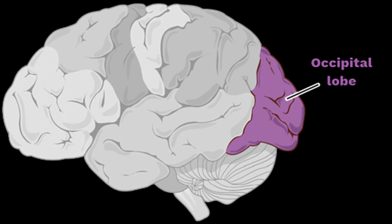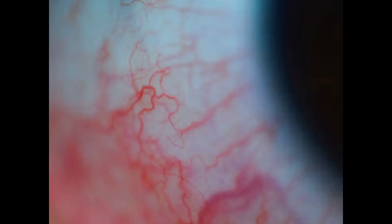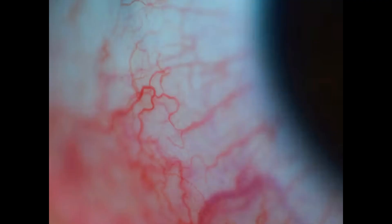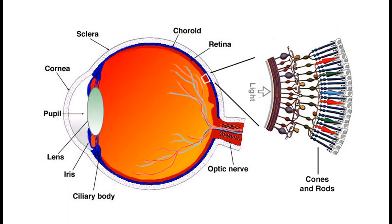The occipital lobe is the visual processing center of the brain, containing most of the anatomical regions of the visual cortex. The surgeon performs a procedure on the capillaries — the smallest of the body's blood vessels — to reverse the direction of blood flow in each capillary, boosting blood flow beneath the rods and cones of the subject's retina. The rods and cones are the light-sensitive receptors located in the back of the eye, and together they detect movement, light, and color, relaying that information back to the brain.